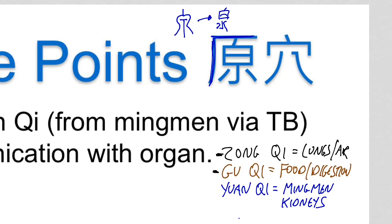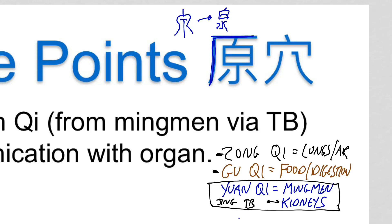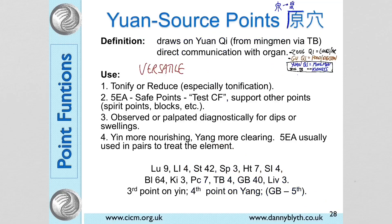There are three types of Qi: Zhong Qi, the Qi of the air and the lungs; Gu Qi from food and digestion. What we're talking about here is the Yuan Qi, which originates in the Mingmen between the kidneys and gets expressed as an expression of Jing via the Triple Burner. This is the type of Qi that these source points connect with.